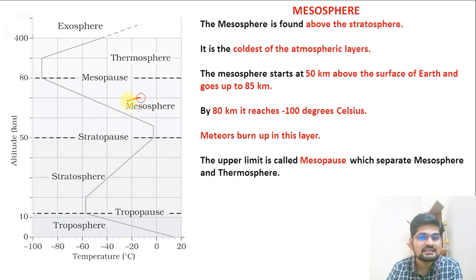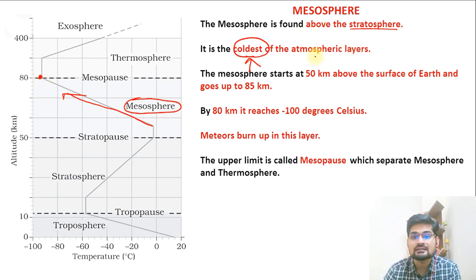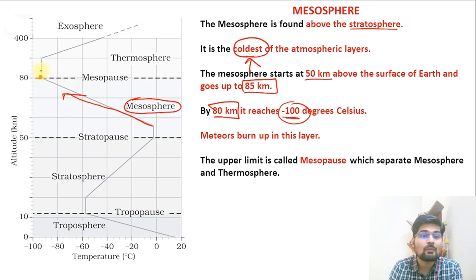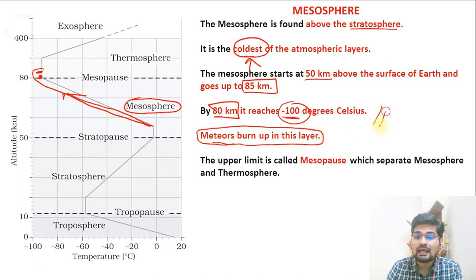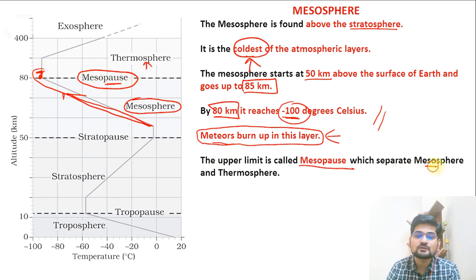The next layer is the mesosphere, found above the stratosphere, varying from 50 to 85 kilometers. This is the coldest layer of the entire atmosphere — by about 80 kilometers, temperatures reach around minus 100°C. Meteors burn up in this layer. The upper limit is called the mesopause, which is the transition zone between the mesosphere and the next layer, the thermosphere.